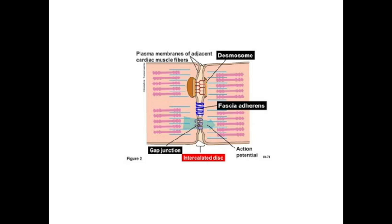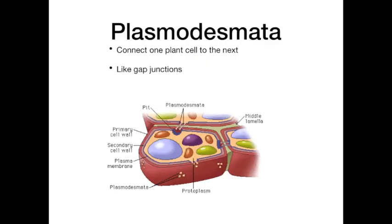Plasmodesmata are connections between plant cells, analogous to gap junctions in animal cells, and occur only in plant cells. This concludes the first part about the cell. In the next part we're going to talk about signal transduction and the rest of the organelles of the cell.